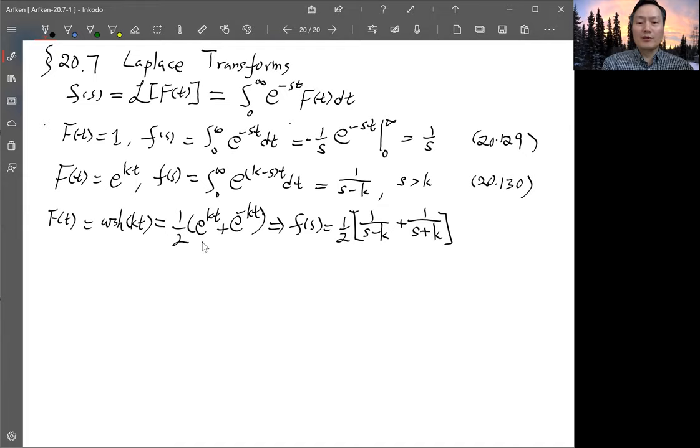You can get the common denominator and what you get is 2s. Actually 2s and then you cancel, the denominator. So just s divided by s^2 - k^2. This is equation 20.132.